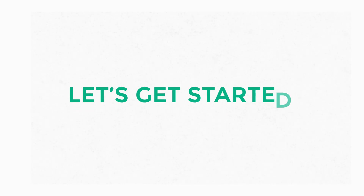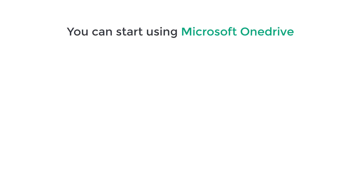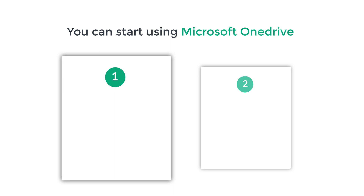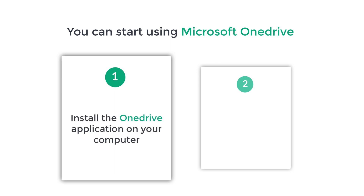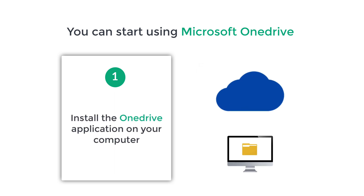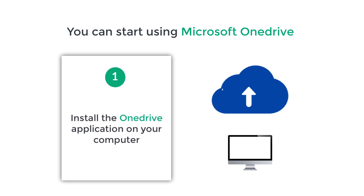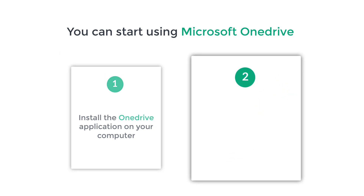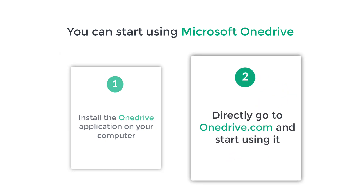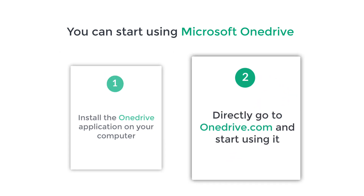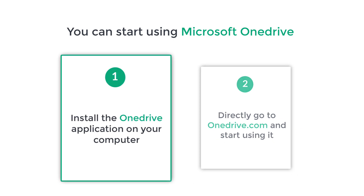So let's get started. I'm Brian from Upstate Learners. Now you can start using Microsoft OneDrive in two ways. First, you can install the OneDrive application on your computer and then start uploading your files to OneDrive. The second way is you can directly go to onedrive.com and start using it. First, let's see how you can install Microsoft OneDrive on your computer.